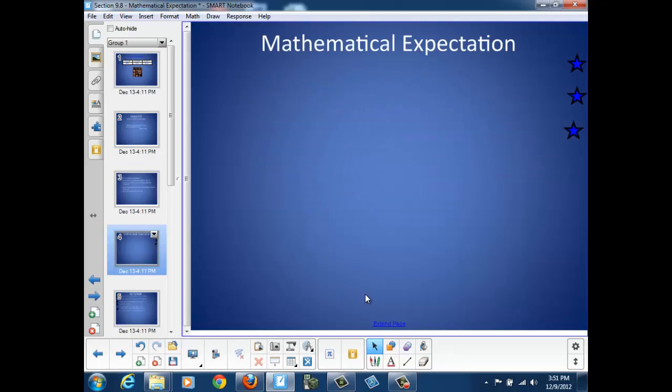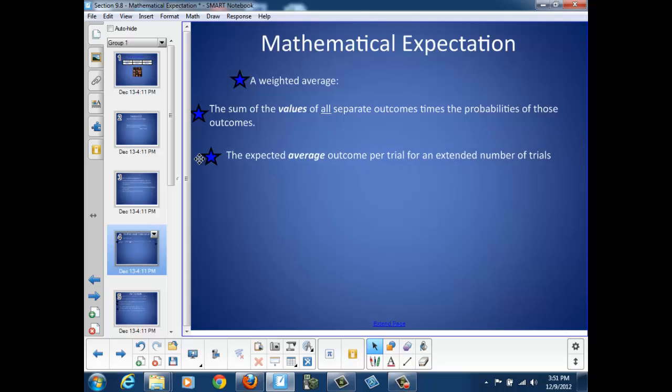Let's start by defining a mathematical expectation. Well, a mathematical expectation is simply a weighted average. The weighted average is calculated by taking the sum of the values of all separate outcomes times the probabilities of those outcomes. It's the expected average outcome per trial for an extended number of trials.